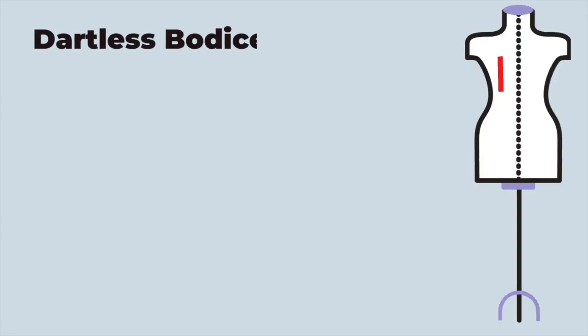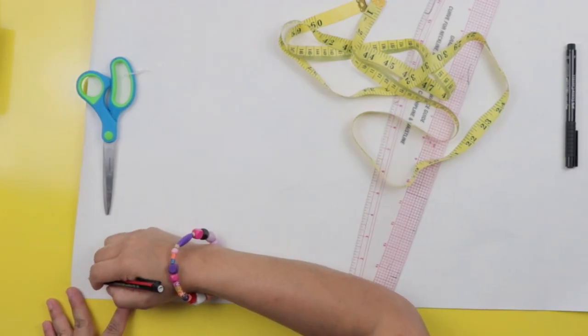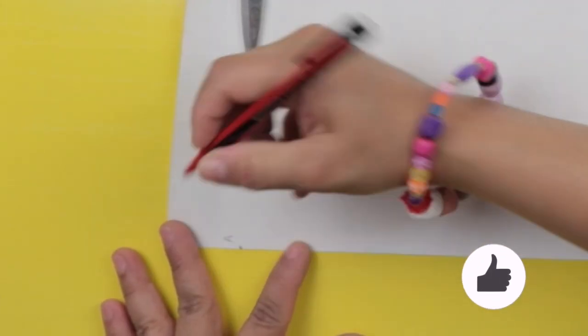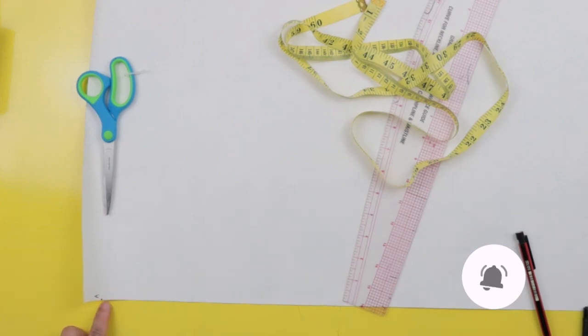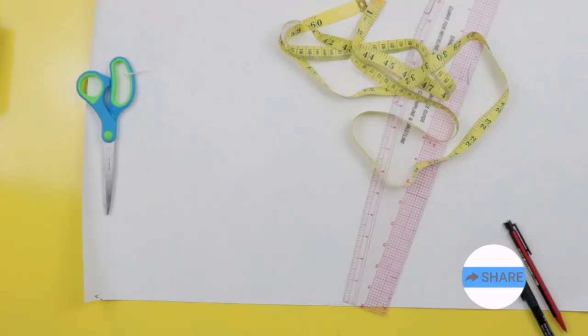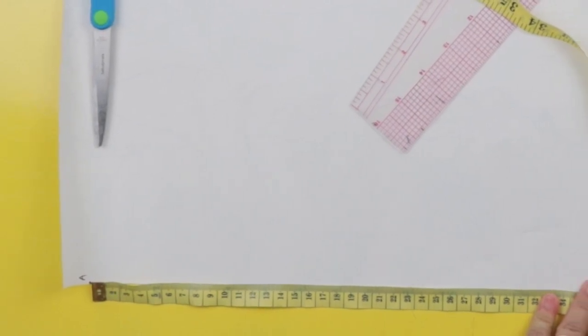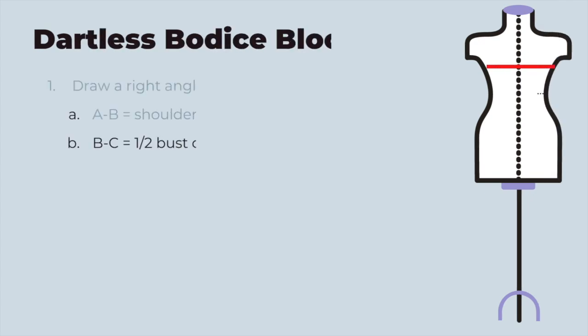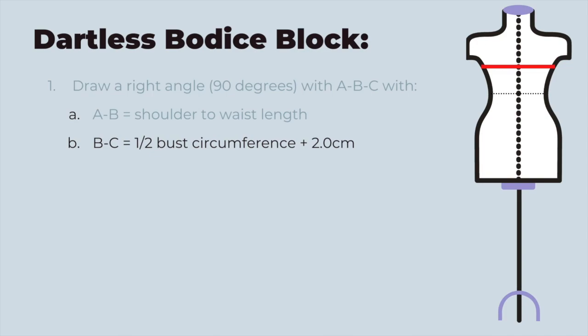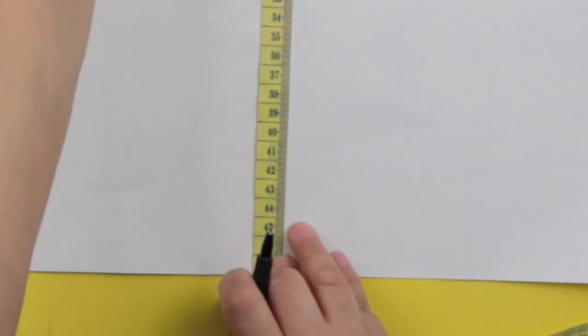So we'll start by making a rectangle from A to B should be your shoulder to your waistline. So whatever it is, your shoulder to your waistline, draw point A, go down all the way to point B. And then we will mark point C from B, which is half your bust circumference plus 2cm for ease.